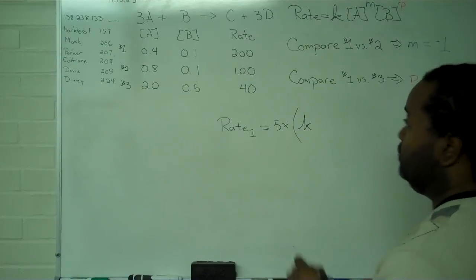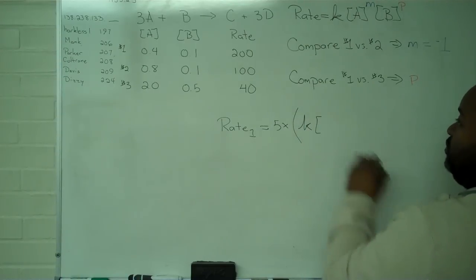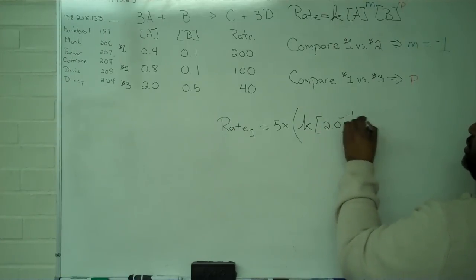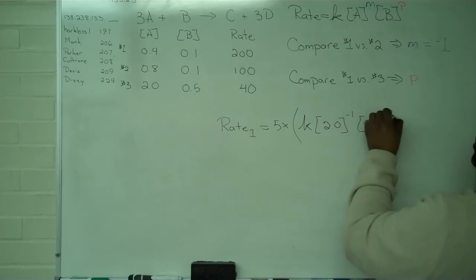We have rate constant, the concentration of A, which is 2.0, to the negative 1, and concentration of B, 0.5, to the P.